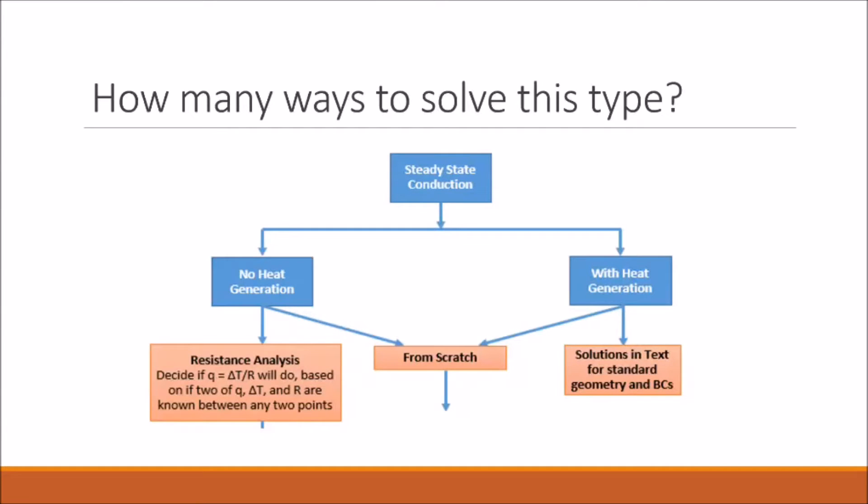Now we can use our steady state flowchart to guide us through the rest of this problem. First we have to determine whether or not heat is being generated. In the problem we're specifically told that the brain is experiencing some type of metabolic heat generation. So we can assume that there is heat generation, and we can rule out this no heat generation branch.